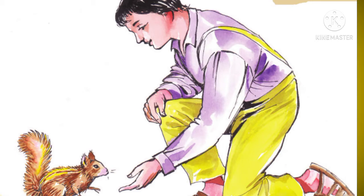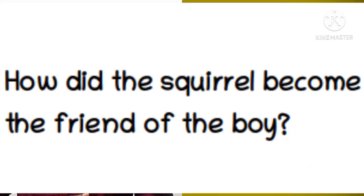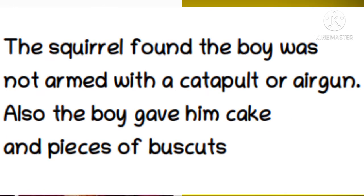Let's see the second question then: How did the squirrel become the friend of the boy? The squirrel found that the boy was not armed with a catapult or air gun. Also, the boy gave him cake and pieces of biscuits.